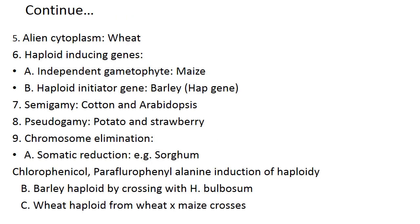The fifth method is alien cytoplasm, which is used in wheat. Next, haploid inducing genes — there are majorly two types. One is the indeterminate gametophyte gene used in maize, and the haploid initiator gene, the hap gene, in barley.